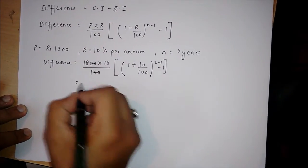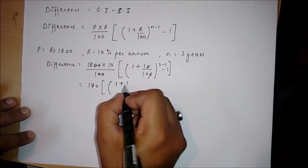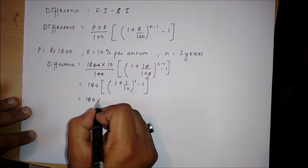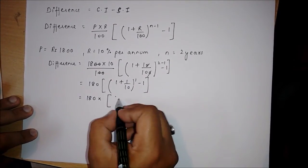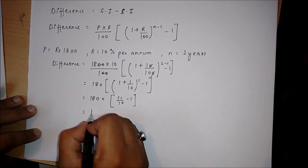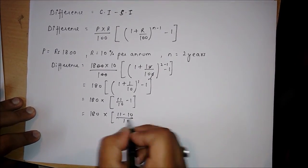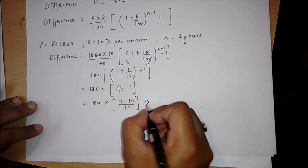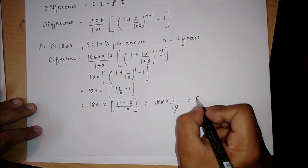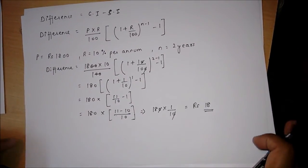Solving the bracket gives 180 multiplied by 1 divided by 10, and we get our answer as rupees 18. This is the difference between simple interest and compound interest.